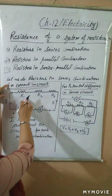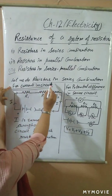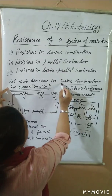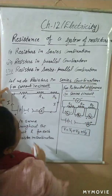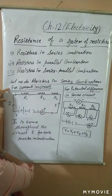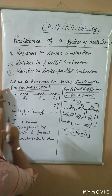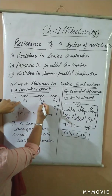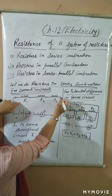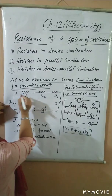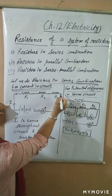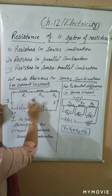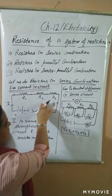In today's topic, we are going to do first — let us combine resistors in series combination first. As you are watching, I have written here series combination. For the series combination, what does it mean? You are watching in the circuit, I am having R1 resistor, R2 resistor, and R3 resistor, and they are joined together with an end-to-end combination — one by one. So this type of combination is series combination.